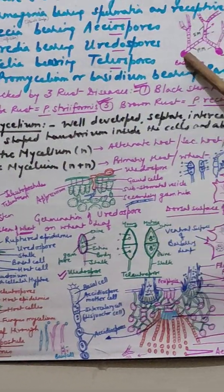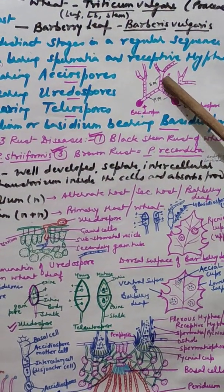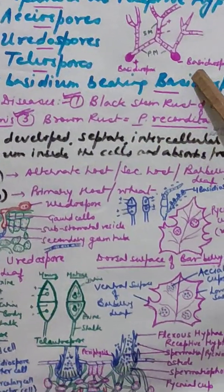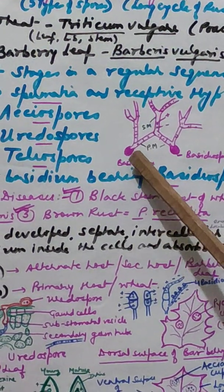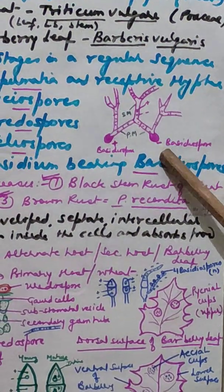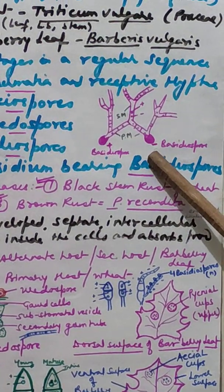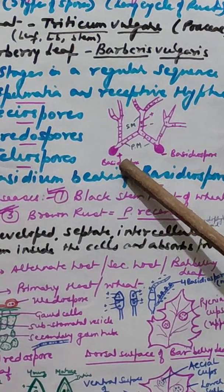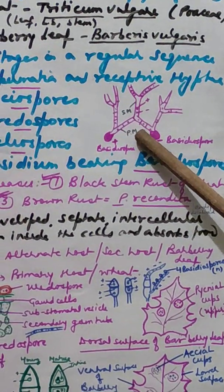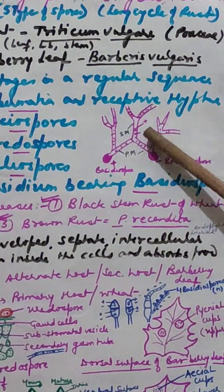Monokaryotic mycelium refers to the formation of a single nucleus in the cell. Dikaryotic mycelium means two different strain nuclei are present in a single cell. One basidiospore of positive strain and one of negative strain each germinate to form primary mycelium — one with positive-strain nuclei and one with negative-strain nuclei. These two primary mycelia fuse to give rise to the secondary mycelium. This process is known as dikariotization — the formation of dikaryotic mycelium, with two nuclei of opposite strain in one cell.